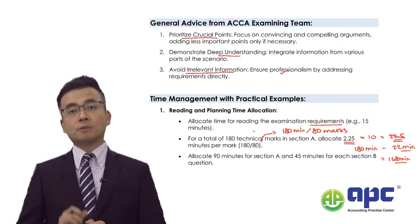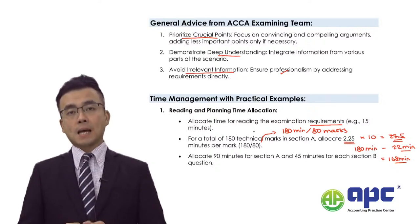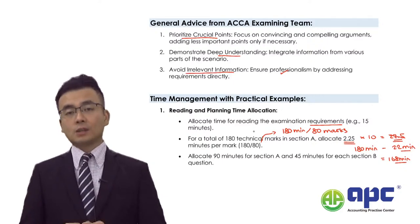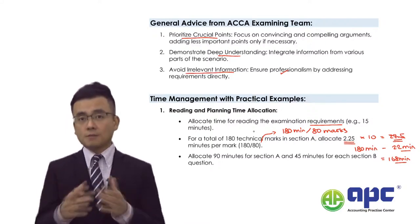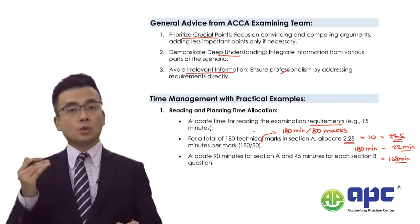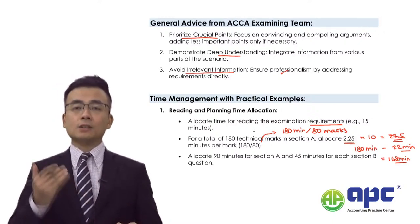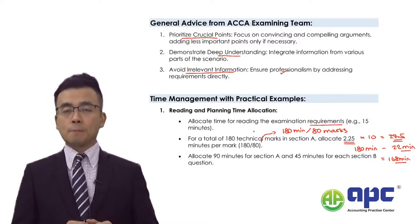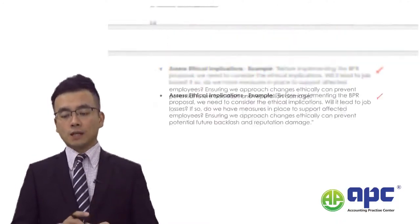Include only relevant information. For example, if you're asked about business process re-engineering — requiring IT and complete system changes — and you start talking about NPV, that information is not relevant at all. You will get no marks for it, and it may even reduce your professional marks in the APM paper.